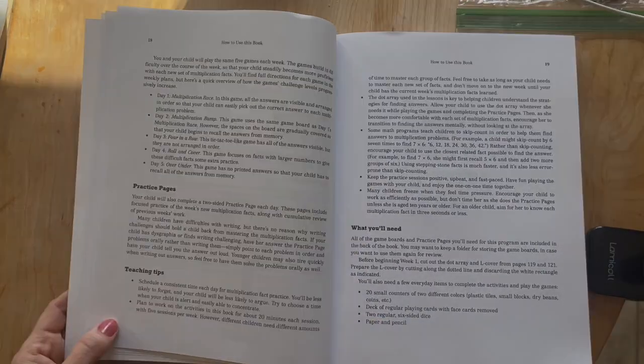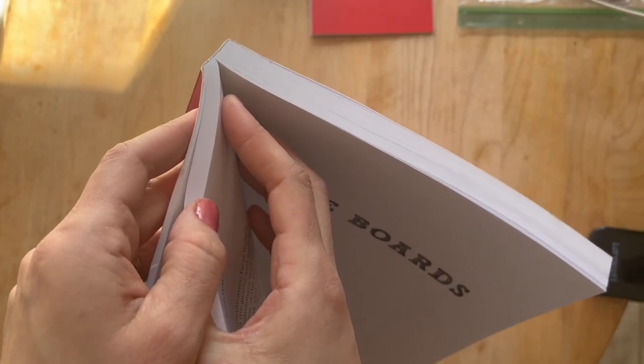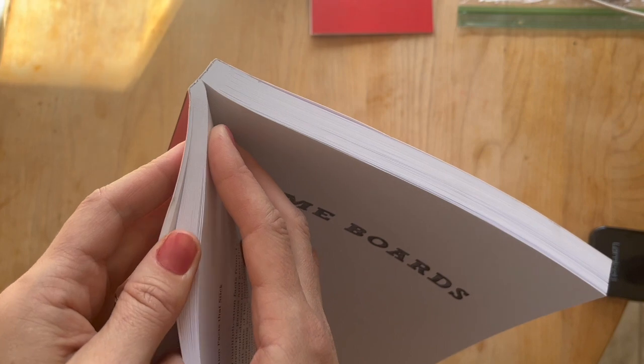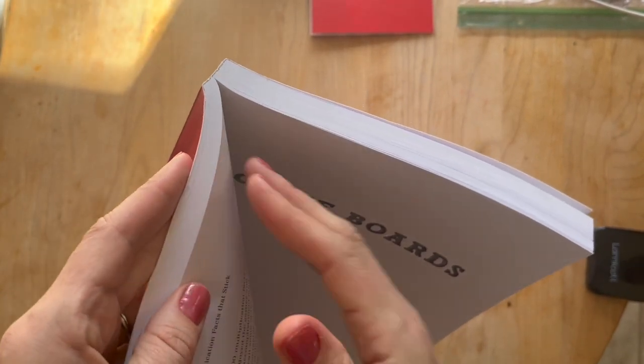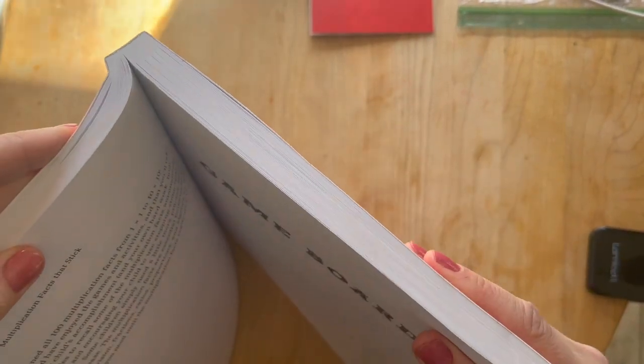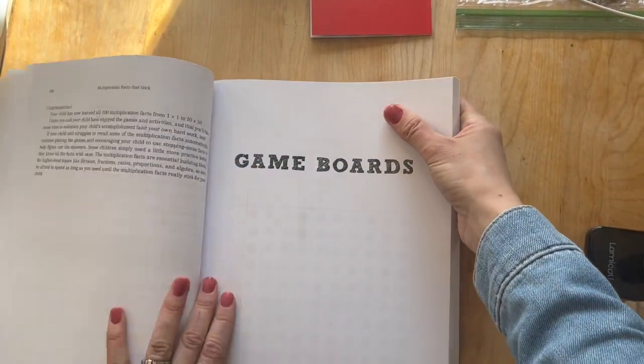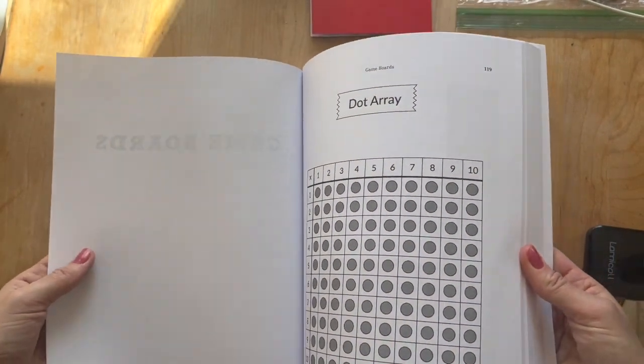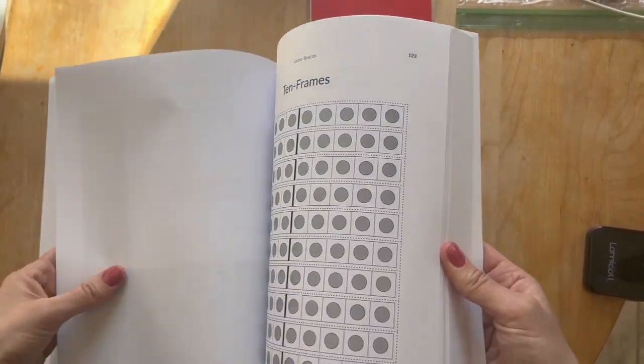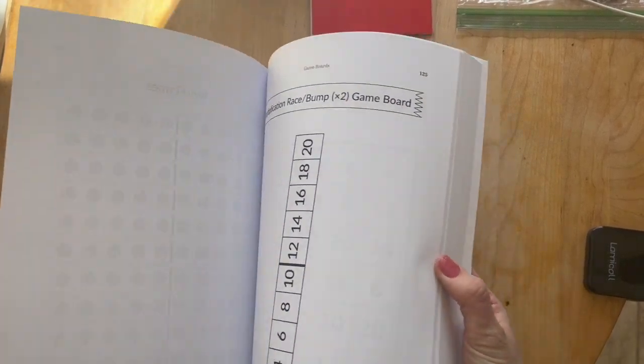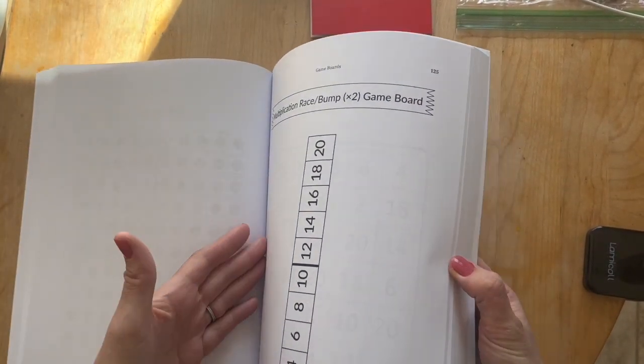You'll find directions for each game in the weekly plans. Then they'll have their practice page, which is totally independent. Actually, this part of the book is going to be the actual teaching and the stuff you'll be doing with your child that you'll be reading through. Now, this back here, that's all going to be game boards, the dot array, the L cover. You'll use that all the time. Your 10 frames. And now you have your board games.